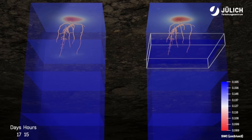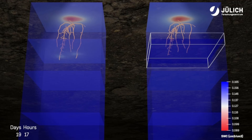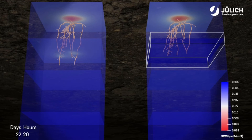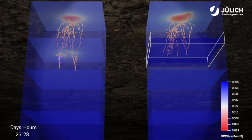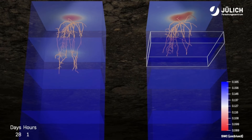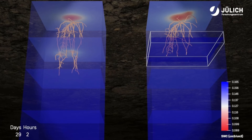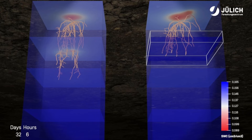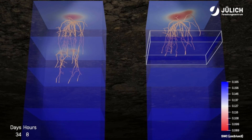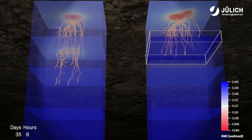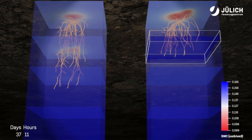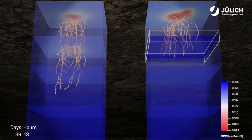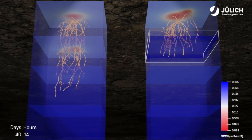This simulation modelling shows the impact of a compacted subsoil layer on the development of a root system on the right, compared to a soil without compaction on the left. As the seminal roots reach the compacted layer, their rate of downward growth slows because the roots encounter greater physical resistance in the compacted layer.